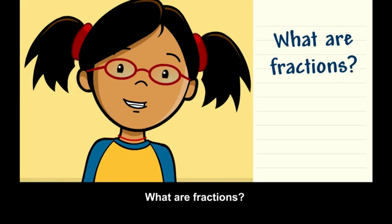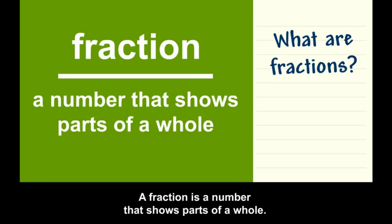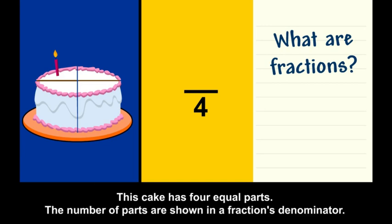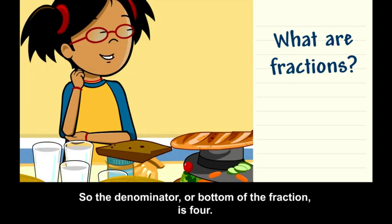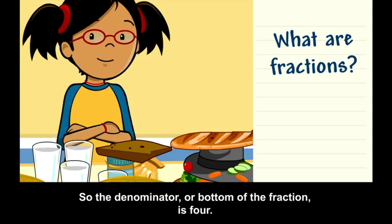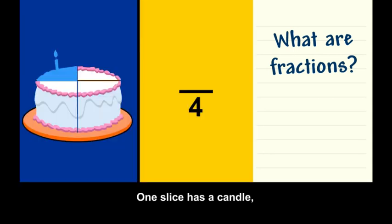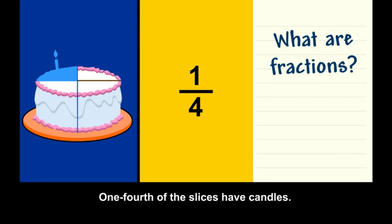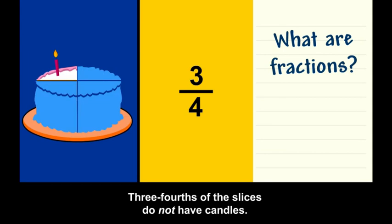What are fractions? A fraction is a number that shows parts of a whole. This cake has four equal parts. The number of parts are shown in a fraction's denominator. So the denominator or bottom of the fraction is four. One slice has a candle and the numerator or top of the fraction is one. One fourth of the slices have candles. Three fourths of the slices do not have candles.